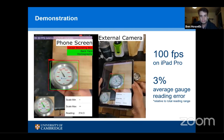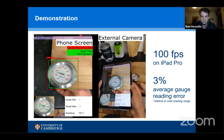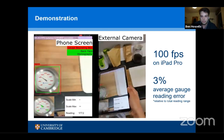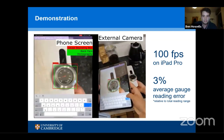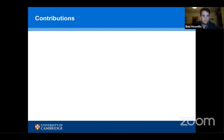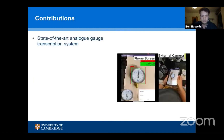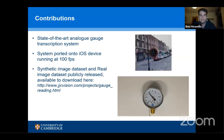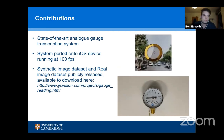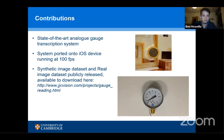You can see the system working for a variety of different unseen gauges, and it's important to stress that the model is trained entirely with synthetic data. The sim-to-real adaptation is working very well. To summarise our contributions: we've built a state-of-the-art gauge transcription system, ported onto iOS devices running at 100 frames per second. Both the synthetic and real image datasets we produced have been publicly released.